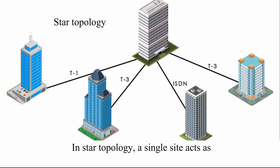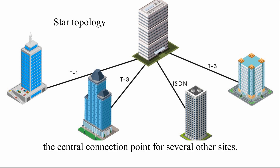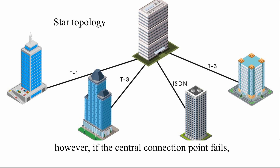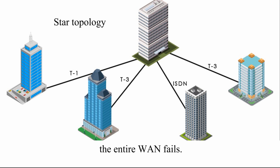In star topology, a single site acts as the central connection point for several other sites. This arrangement provides separate routes for data between any two sites. However, if the central connection point fails, the entire WAN fails.